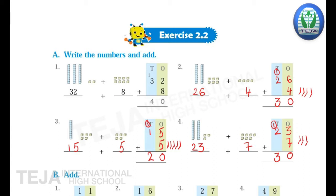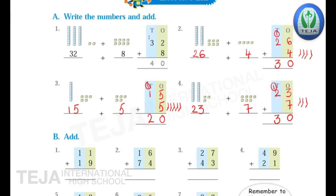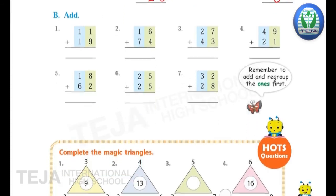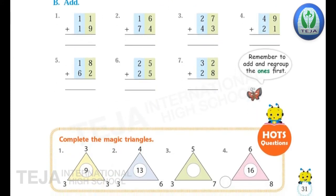Check your answers children. 2nd one answer 30, 3rd one 20, and 4th one is 30. Now the next bit — Bit B: Add. The numbers in the first question are 11 plus 19. So we will write the place values first: this is the 1's place, next the 10's place. Addition of 2-digit numbers. First, add the numbers which are there in the 1's place, then add the numbers in the 10's place.